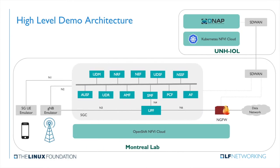This shows the high-level demo architecture. Starting from the far left, we see the UE emulator and the GNODEB emulator. These communicate with the 5G core, which is in the middle, over N1, N2, and N3 interfaces, which are defined by 3GPP. The 5G core itself consists of numerous microservices. The data path goes over the UPF microservice, and the output of the UPF is the N6 interface, which goes to the next-gen firewall, which in turn connects to the data network. All of these CNFs are running on an OpenShift NFPI cloud. The management and orchestration layer on the top right is code from ONAP, which is running on a separate Kubernetes and FVI cloud, and the two communicate over SD-WAN.